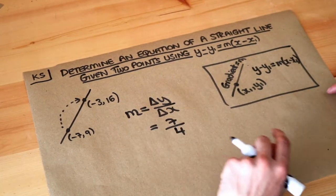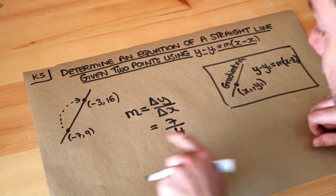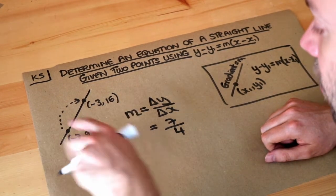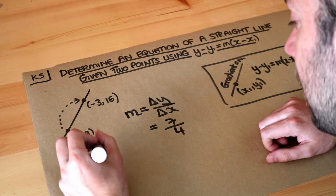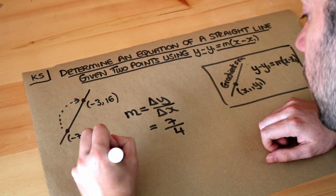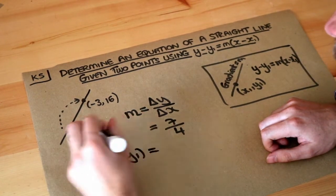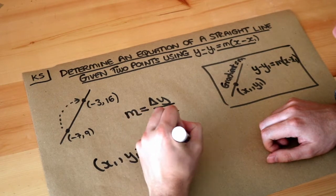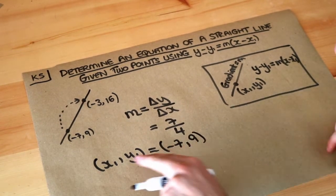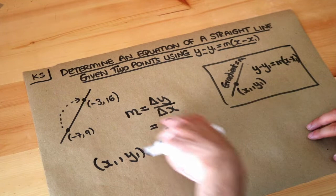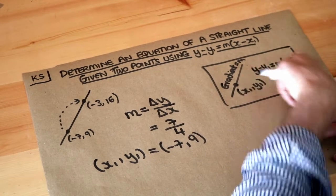Now that we've got the gradient, and we've got a fixed point on the line, let's choose either one. I'm just going to choose minus 7, 9 — it doesn't really matter. So our fixed point x1, y1 is minus 7, 9. All that's left is to substitute that and the gradient into the equation.